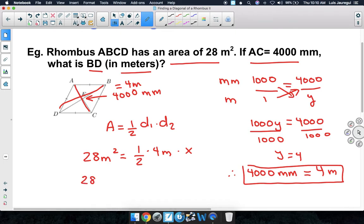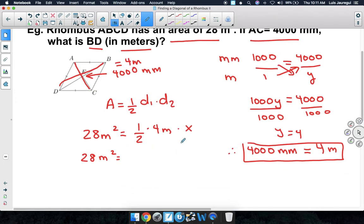Notice that we are going to get the equation 28 square meters equals 1 half of 4 meters times X. A half of 4 meters is simply 2 meters, and then we're going to multiply that by X.